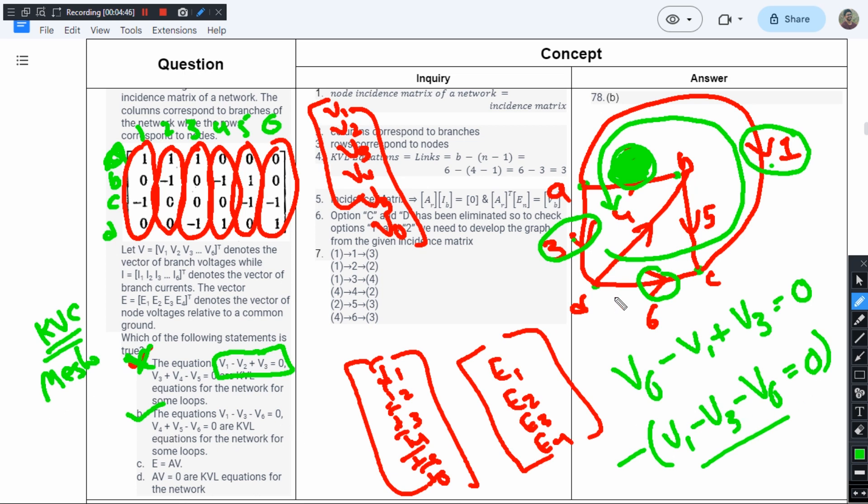Now let us verify V4, V5, and V6. Here we have V4, V5, and V6. Let us form the loop equation: V4 plus V5 minus V6 equals zero. These two equations are in alignment with option B, so option B is the right answer.